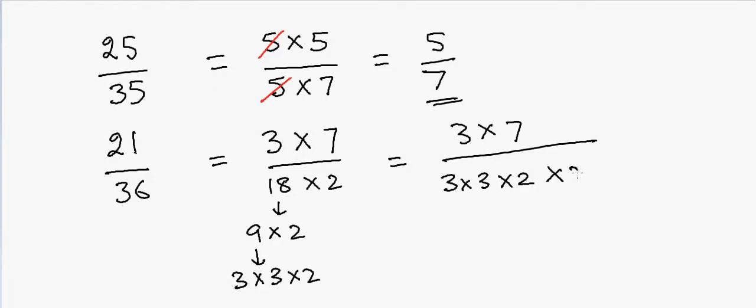So let's check: 3 into 3 is 9, 9 into 2 is 18, 18 into 2 is 36. Now this is what we have. Now we can cancel out the 3 and we are left with 7 divided by 3 into 2 is 6, so 7 by 12.